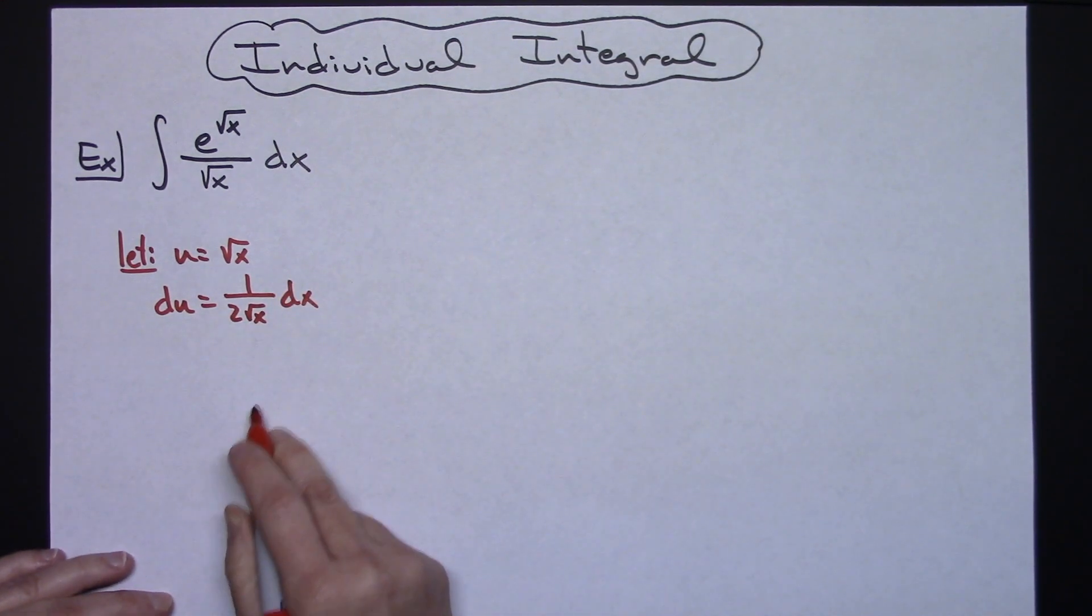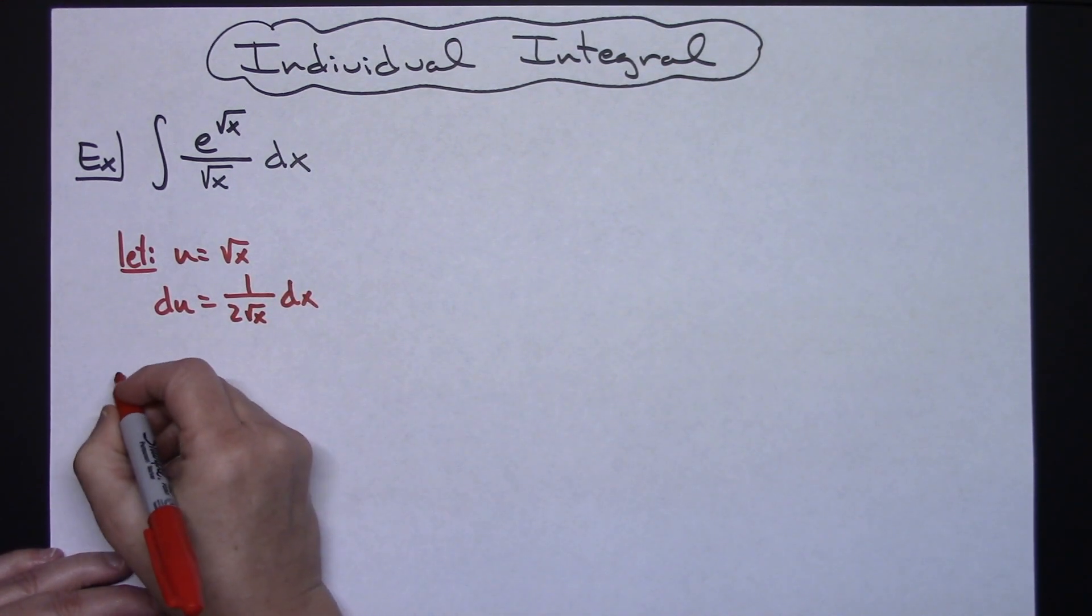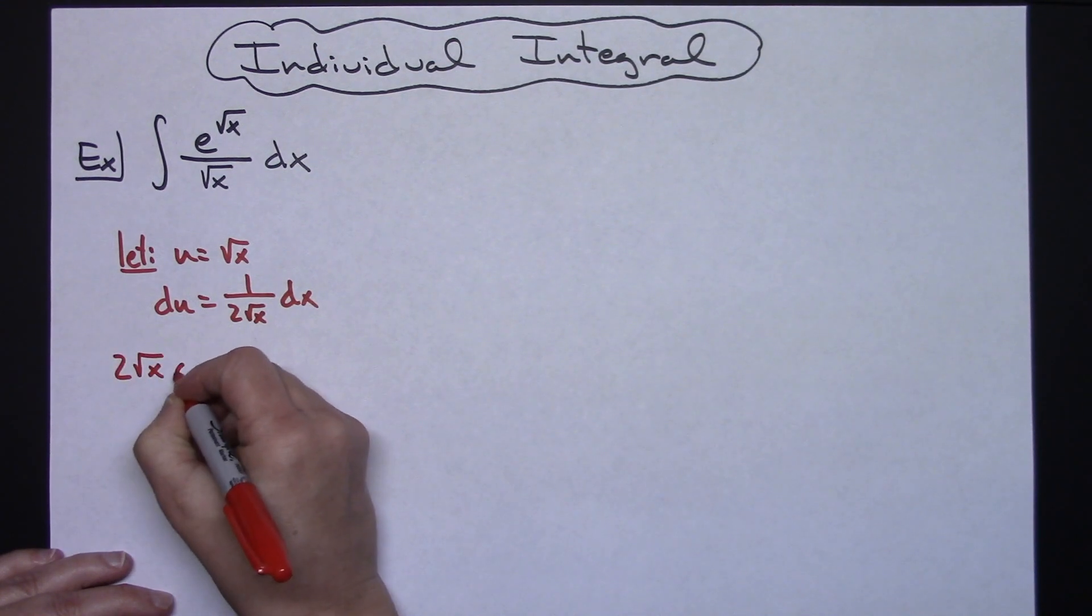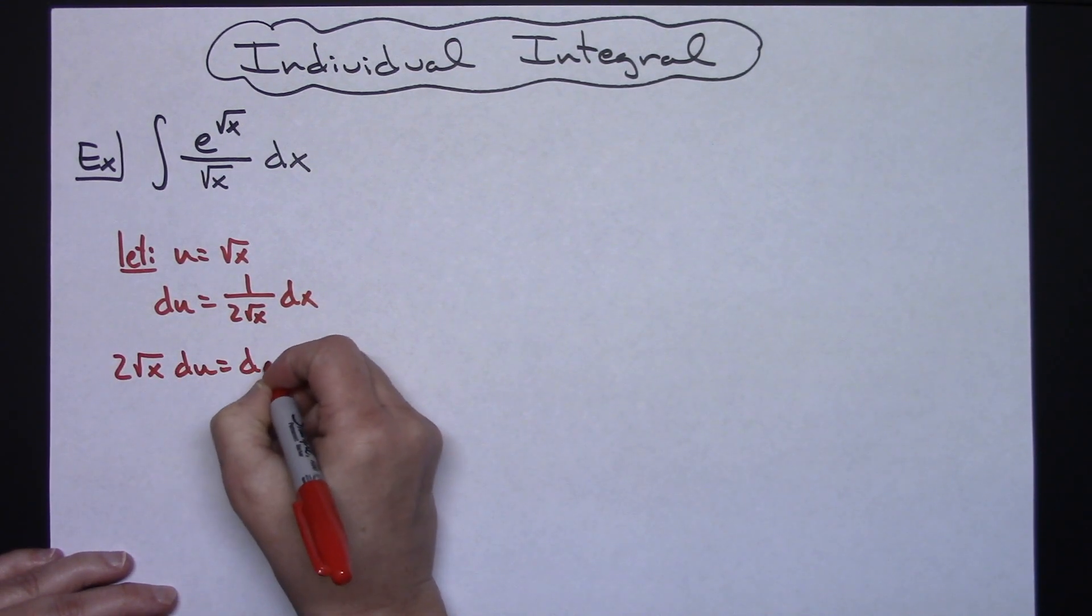I'm going to go ahead and solve for dx multiplying both sides by that 2 square root of x. So we'll have 2 square root of x du is equal to that dx.